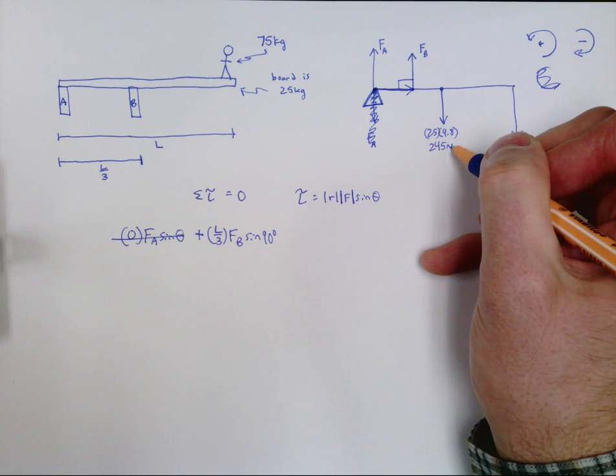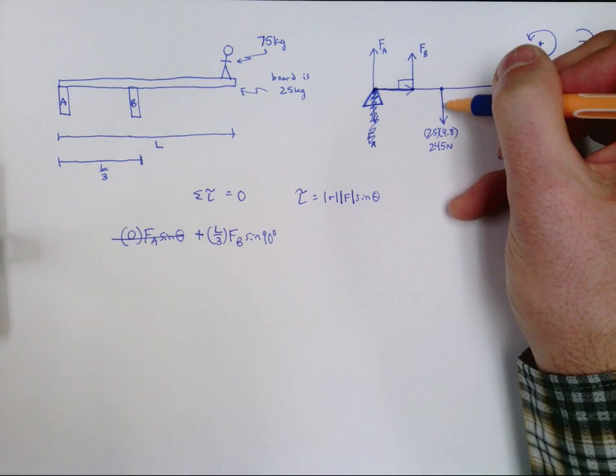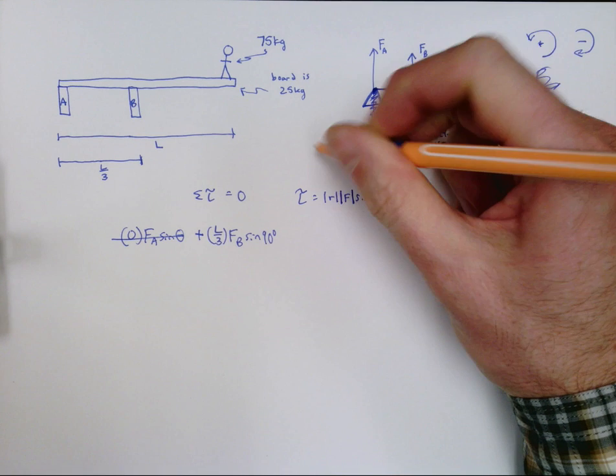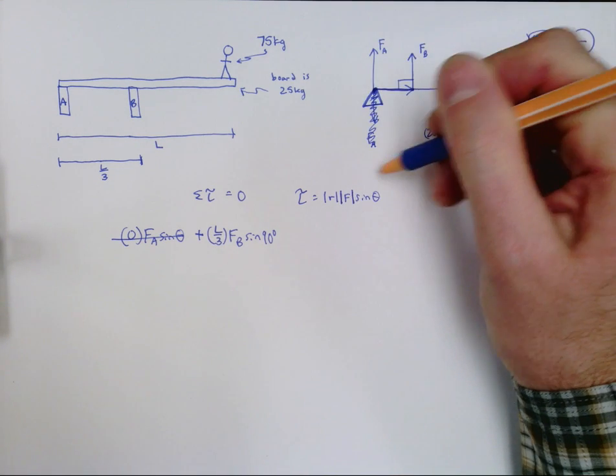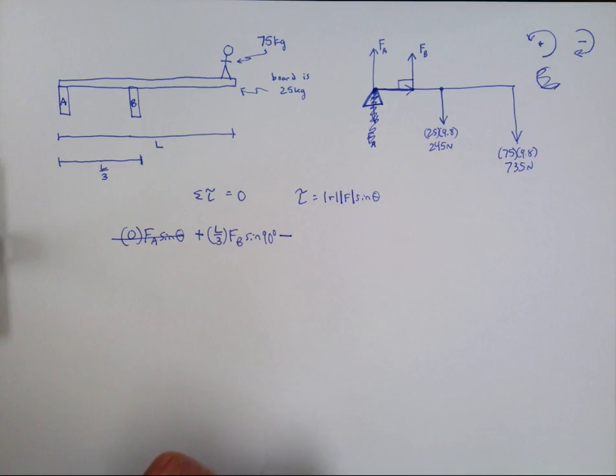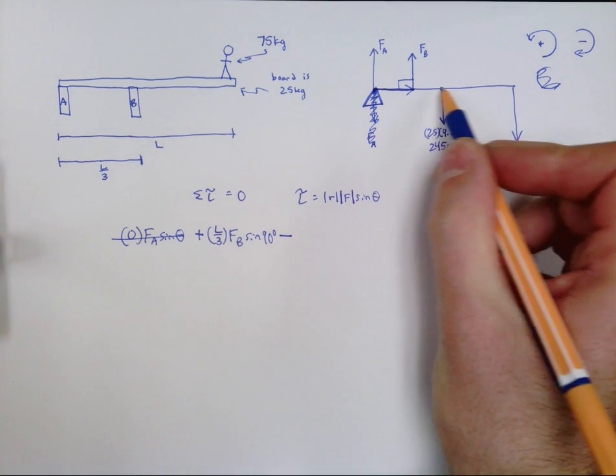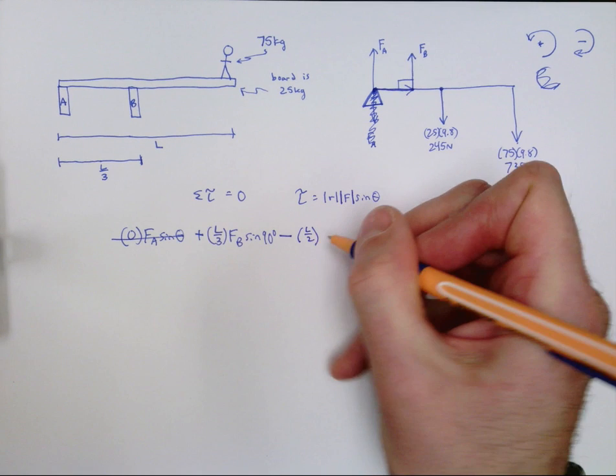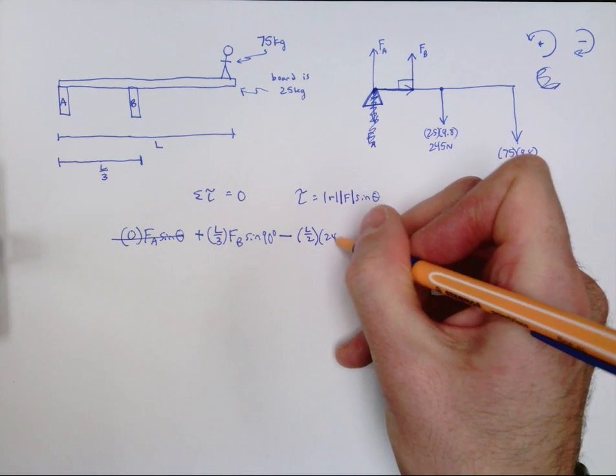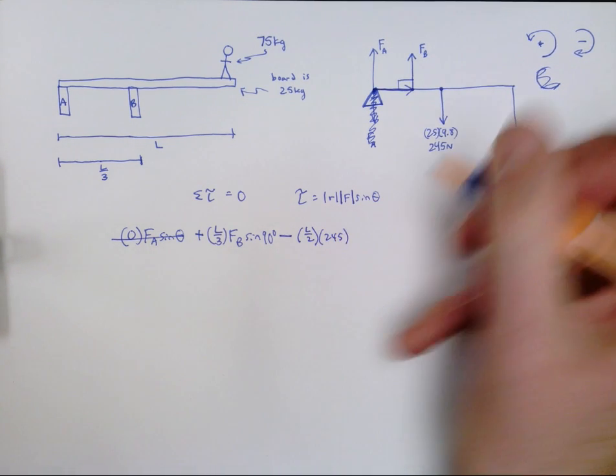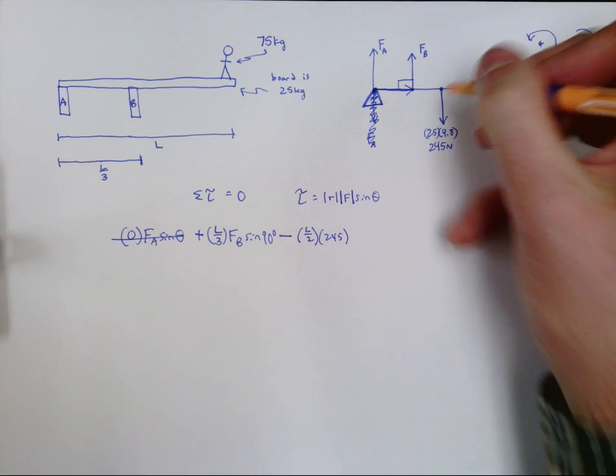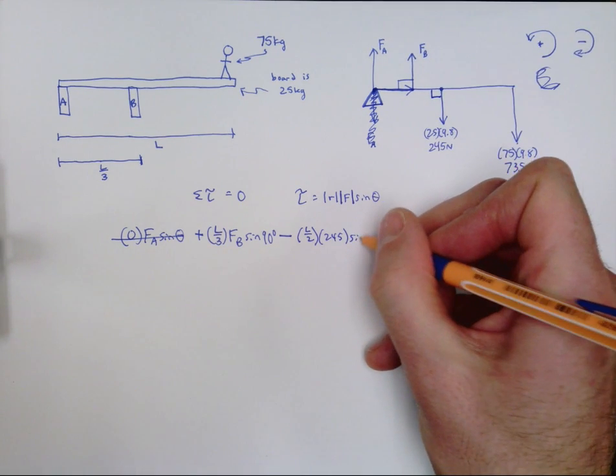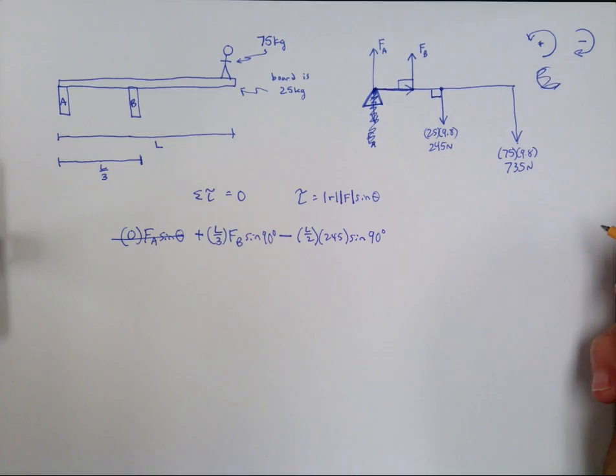Let's move on to this 245 Newton force. The 245 Newton force would have a tendency to make this rotate in the clockwise direction, so I'm going to put a negative sign in front of it. This is the center of mass of the board, which would be halfway through the board, L over 2. And the amount of force is 245. It doesn't matter that it points downward, because we're using the absolute value of the force. And the angle between the radius and the force is 90 degrees.